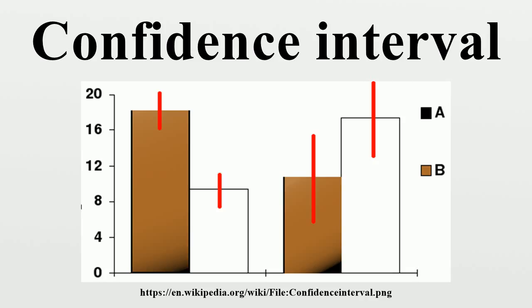A 95% confidence interval does not mean that 95% of the sample data lie within the interval. A confidence interval is not a range of plausible values for the sample mean, though it may be understood as an estimate of plausible values for the population parameter. A particular confidence interval of 95% calculated from an experiment does not mean that there is a 95% probability of a sample mean from a repeat of the experiment falling within this interval.